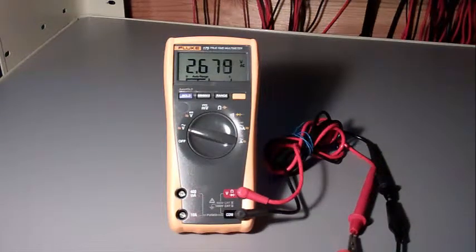Now use the Fluke meter to measure the AC RMS voltage, 2.67 volts. That's 7.9 volts AC RMS.